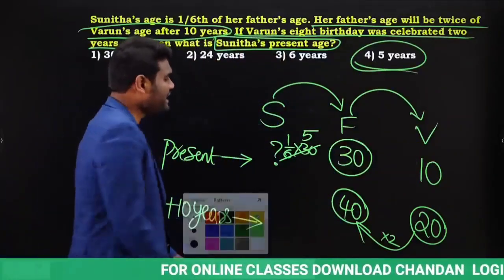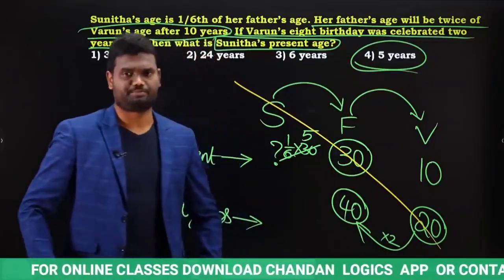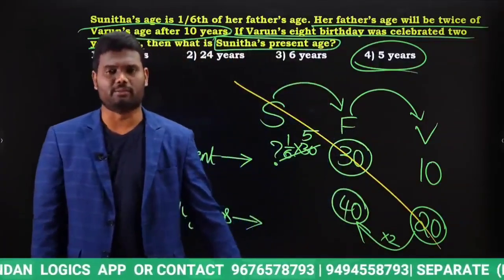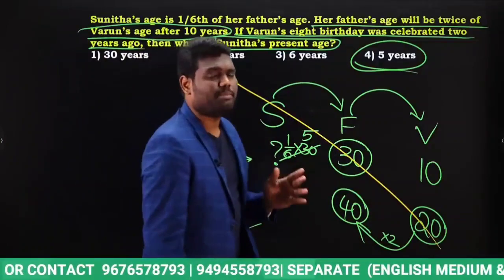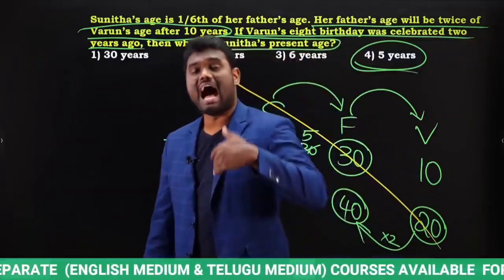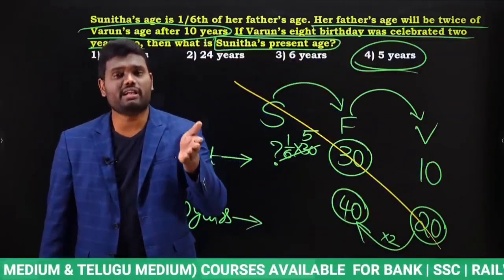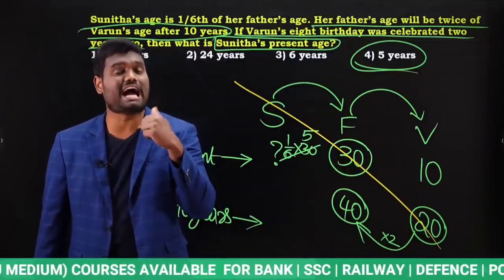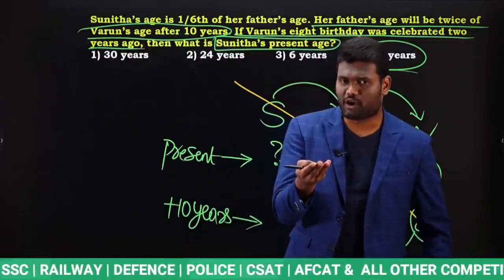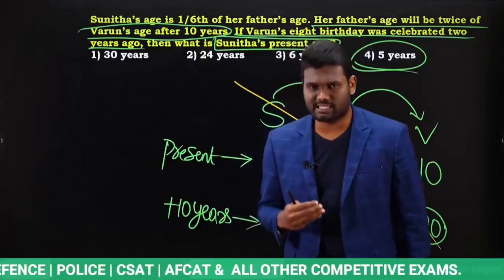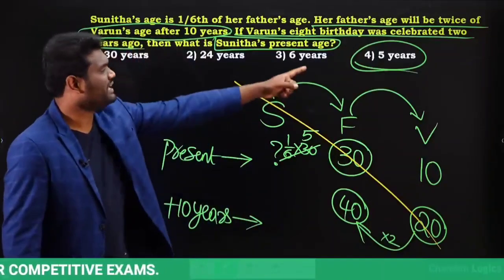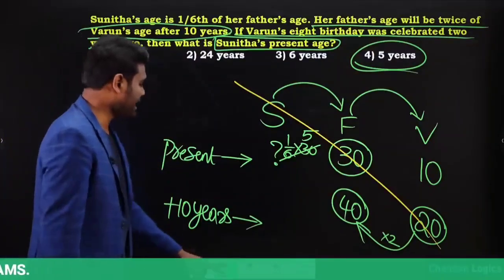This question can be done orally. Varun celebrated his 8th birthday 2 years back, so present age is 10. After 10 years, Varun is 20, and father's age is double — 40. Father's age after 10 years is 40, so present age is 30. Sunita's age is 1/6 of 30, which is 5 years. Sunita's present age is 5 years — very simple.